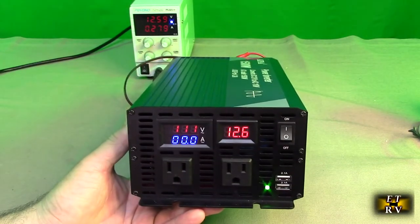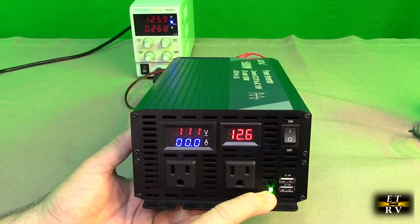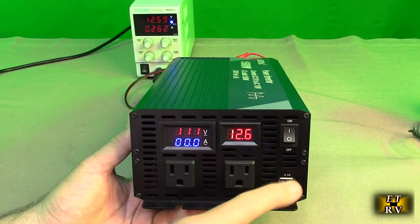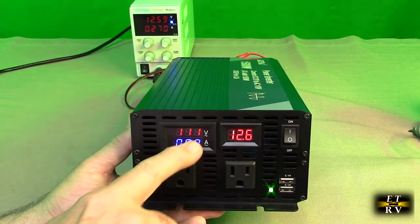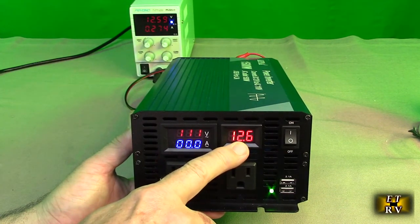If you look over here on the front, I have the unit turned on and it's got a really nice display. I really like this. You got indicator right there, power green, you have the two USB A ports there, and you got this nice display. 12.6 is my input voltage and that is the output voltage, 110.